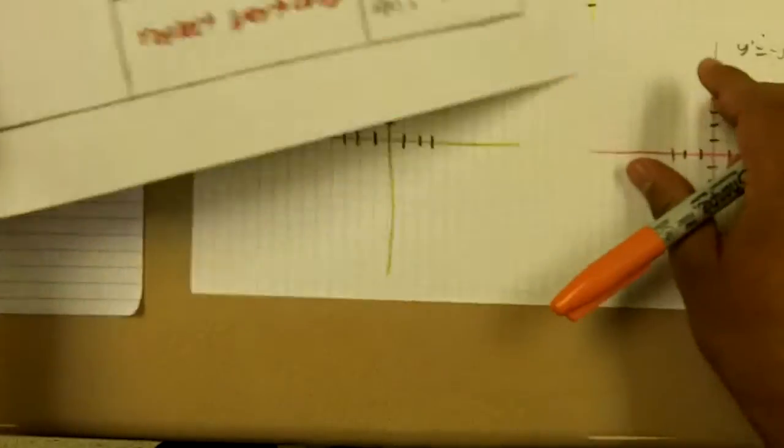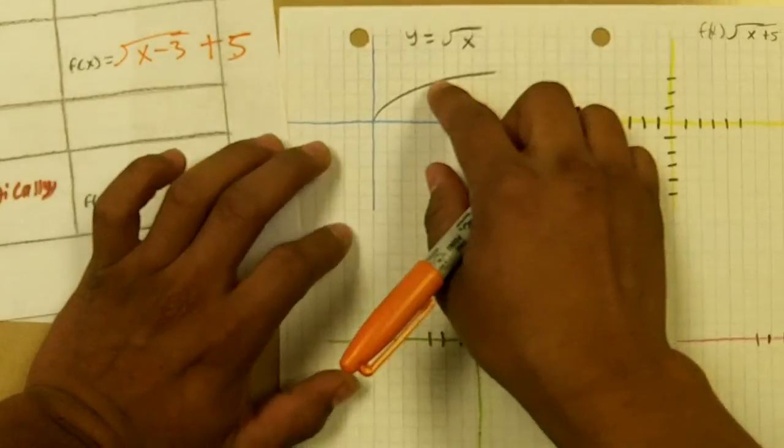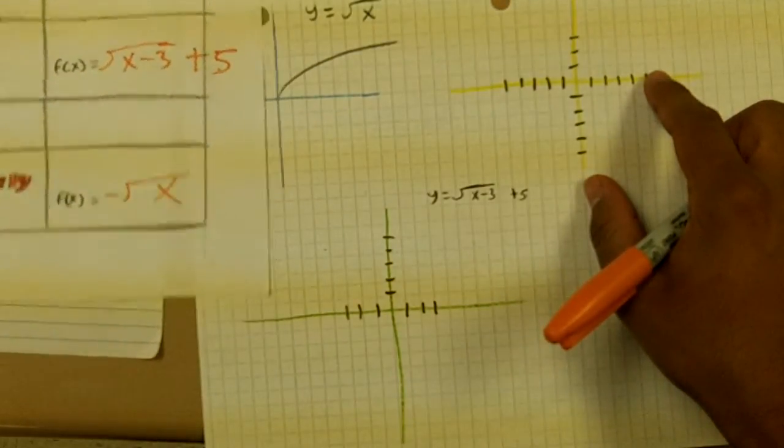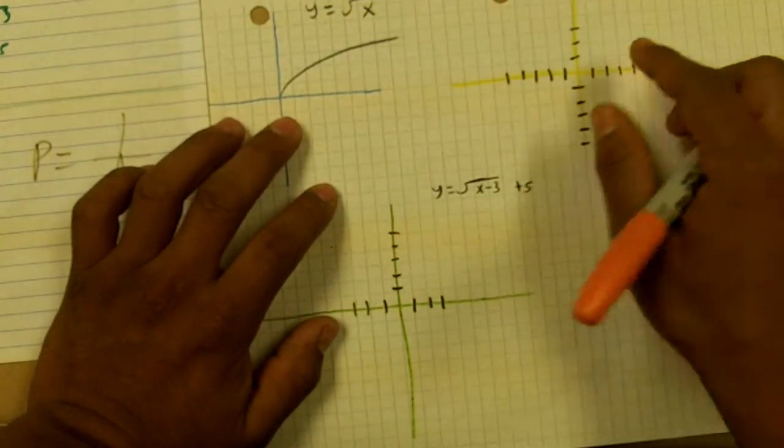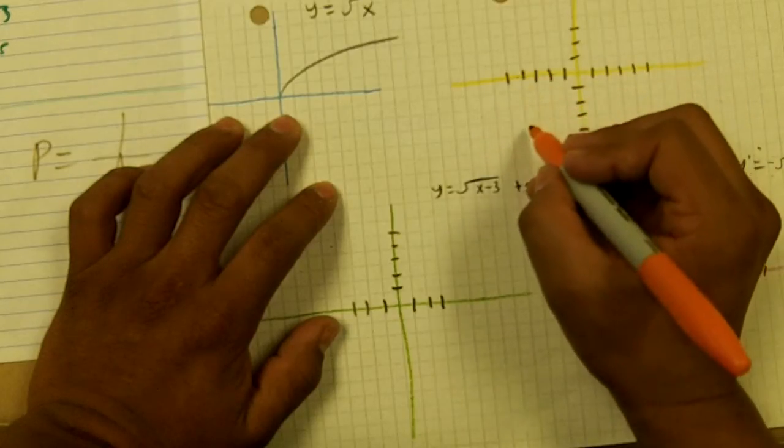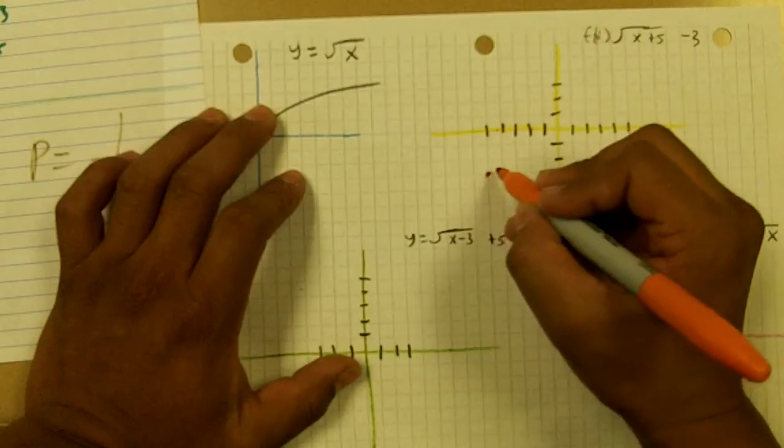And if we graph these right here on the calculator, this is the original one. And then for our new one, we go here five times to the negative and then we come down three. So it's going to look something like that.